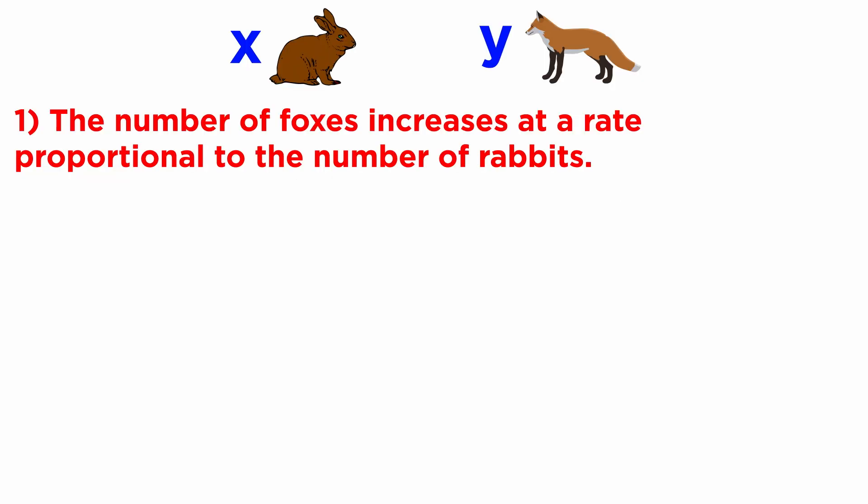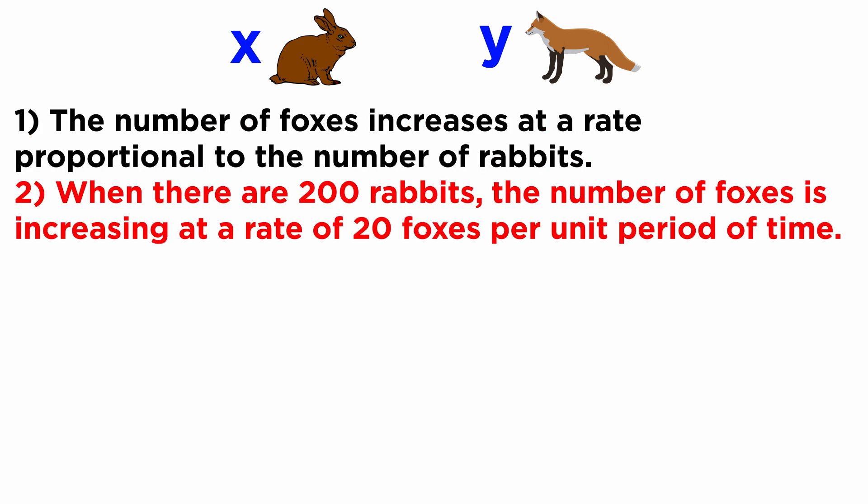First, the number of foxes increases at a rate proportional to the number of rabbits. Second, when there are 200 rabbits, the number of foxes is increasing at a rate of 20 foxes per unit period of time.